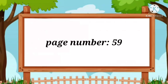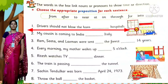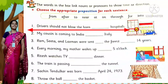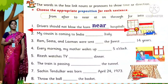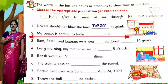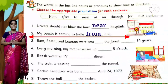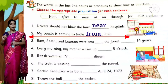Please take page number 59. Choose the appropriate preposition for each sentence. First question: Drivers should not blow the horn ___ hospitals — near hospitals. Second question: My cousin is coming to India ___ Italy — from Italy. My cousin is coming to India from Italy.